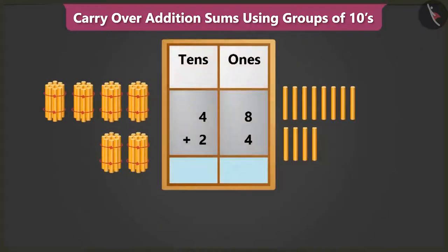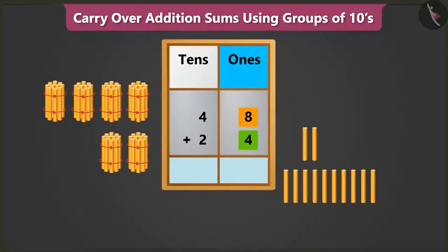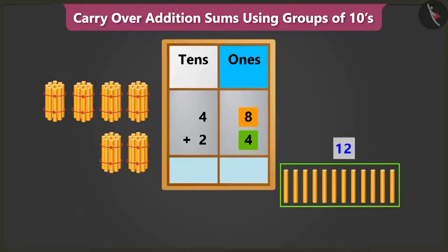First, let's add the numbers in the ones place. We have to add 8 ones to 4 ones. So count after 8: 9, 10, 11, and 12. This means 8 ones and 4 ones add up to 12 ones.